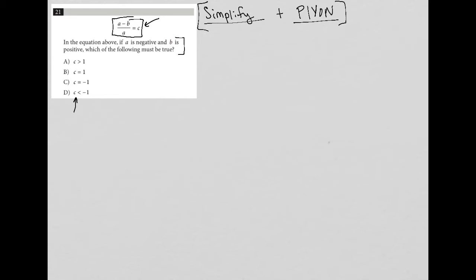So the question says, in the equation above, if A is negative, okay, well, based upon plug in your own number, I'm going to say A is equal to negative two. That's my favorite number to start with. You can choose a different number. In fact, I suggest you choose a different number just to prove that you'll still get the exact same answer that I get here.